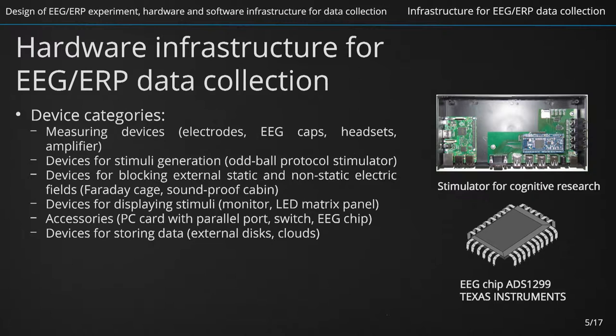The next category is represented by devices that are used for stimuli generation in case we are performing an ERP experiment. A typical example is an oddball stimulator that performs different kinds of visual or auditory oddball paradigm to elicit the subject's event-related response. Although its software competitors are often used, the hardware-software solution has its advantage when combining and synchronizing a number of signals. Of course, the stimulator has to be precisely synchronized with the amplifier output.